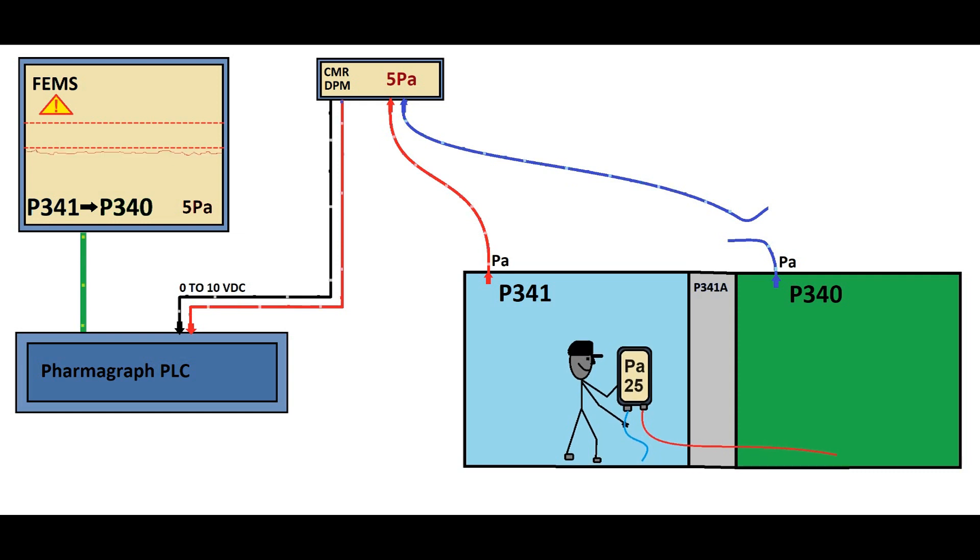A broken tube in the link between the differential pressure module and the affected rooms is identified during this investigation. This revelation is crucial insight for the root cause of the anomaly, reinforcing the necessity for remedial action.